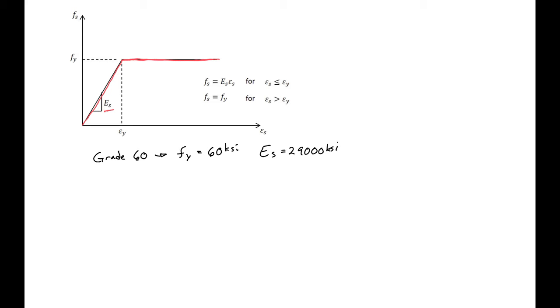So the first thing that we'll want to do is find our yield strain. So to do this we can use our Hooke's Law expression and just divide our 60 KSI by 29,000 KSI and find our yield strain to be 0.0021.